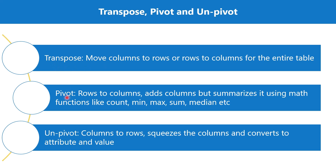In this video we are going to focus on three such transformations. The first one is transpose, the second one is pivot, and the third one is unpivot. Let's first look at a quick definition of what these transformations are. Transpose is where the columns are moved to the rows and rows are moved to the columns for the entire table — the columns are swapped with the rows.